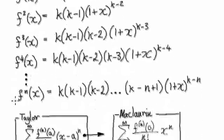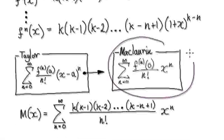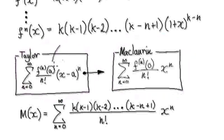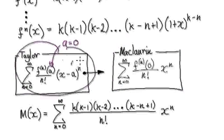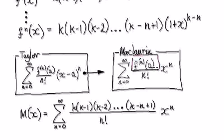To do this, remember the Maclaurin series is the Taylor series centered at 0. So if you make a equal to 0, then the Taylor series will become the Maclaurin series. It is a Maclaurin series that we're interested in, but we need to know the nth derivative at each step of the way, evaluated at 0.